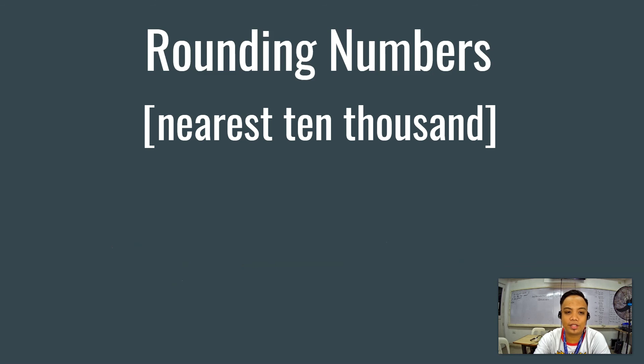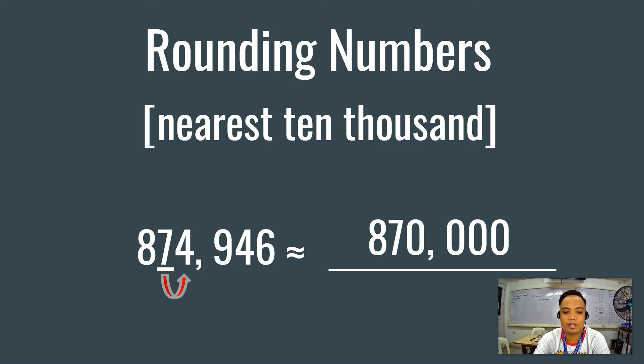Now, let's try rounding off numbers to the nearest ten thousand. We have here 874,946. Let's locate the ten thousand digit. It's 7. How about the preceded number? You're correct. It's 4. Should we round this down or should we round this up? When we round this number, it will become 870,000.